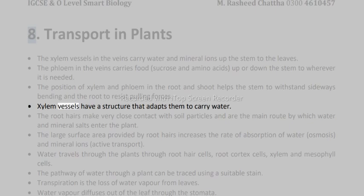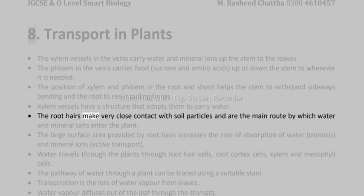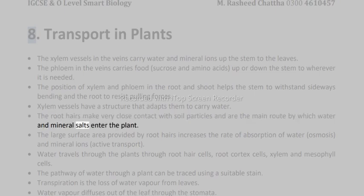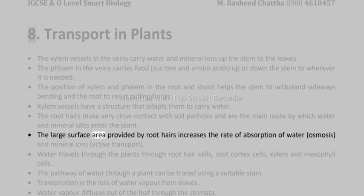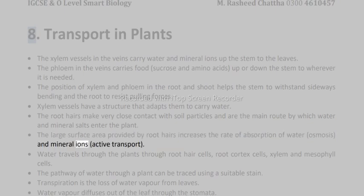Xylem vessels have a structure that adapts them to carry water. The root hairs make very close contact with soil particles and are the main route by which water and mineral salts enter the plant. The large surface area provided by root hairs increases the rate of absorption of water by osmosis, and mineral ions by active transport.